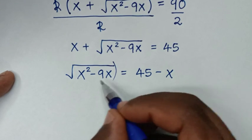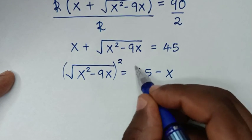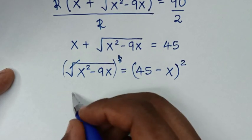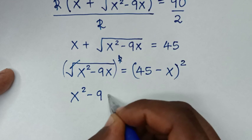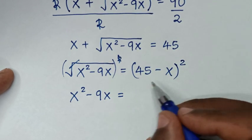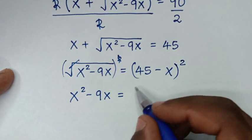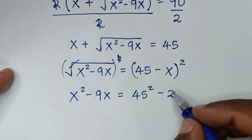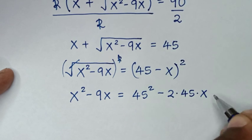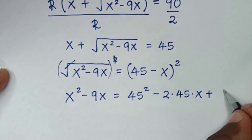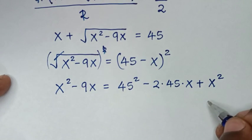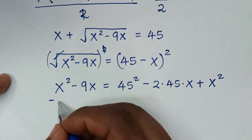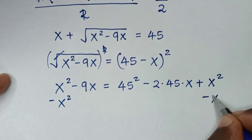Now, to remove this square root, we'll square both sides. The square root cancels with the square, giving x²−9x on the left. On the right, we square (45−x), which expands to 45² minus 2 times 45 times x plus x². In both sides we have x², so we subtract x² from both sides.